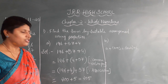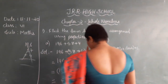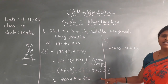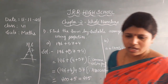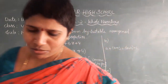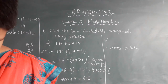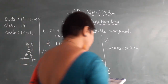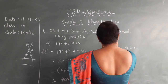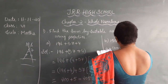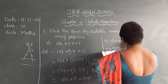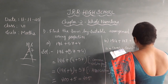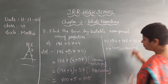Is it clear children? So the properties we are using here: commutative property and associative property. Now we will see one more example where we have 4 numbers: 154 plus 197 plus 46 plus 2.